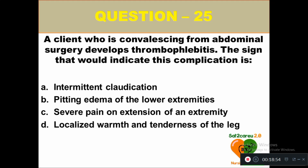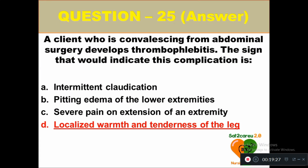Question 25: A client recovering from abdominal surgery develops thrombophlebitis. The sign that would indicate this complication is: option A intermittent claudication, option B pitting edema of the lower extremities, option C severe pain on extension of an extremity, option D localized warmth and tenderness of the leg. The right answer is option D — localized warmth and tenderness of the leg indicates the complication of thrombophlebitis.